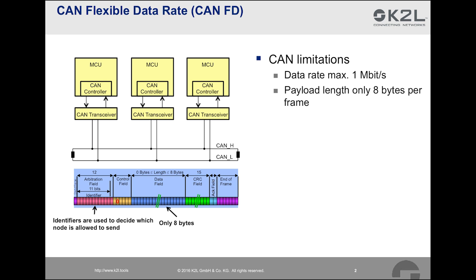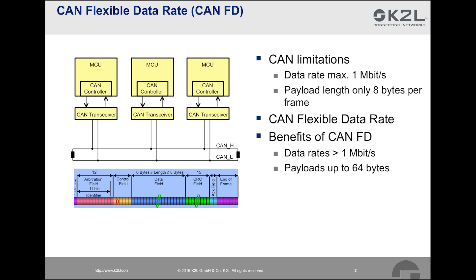At the beginning of this decade, Bosch came up with a next-generation CAN called CAN Flexible Data Rate, or CAN-FD, which tackles the aforementioned limitations of CAN. Data rates can be greater than 1 megabit per second, and the payload of the frame was extended up to 64 bytes.